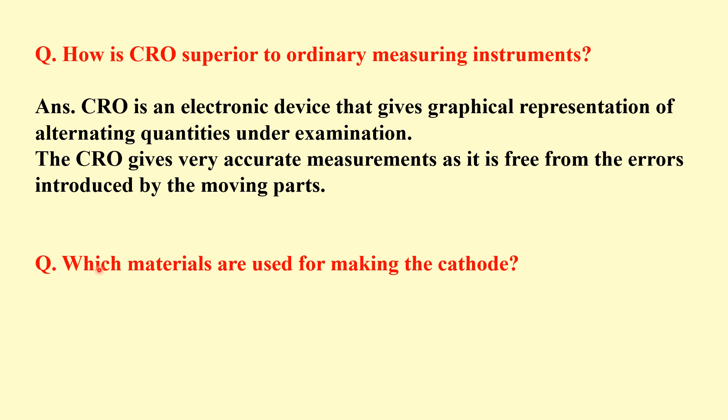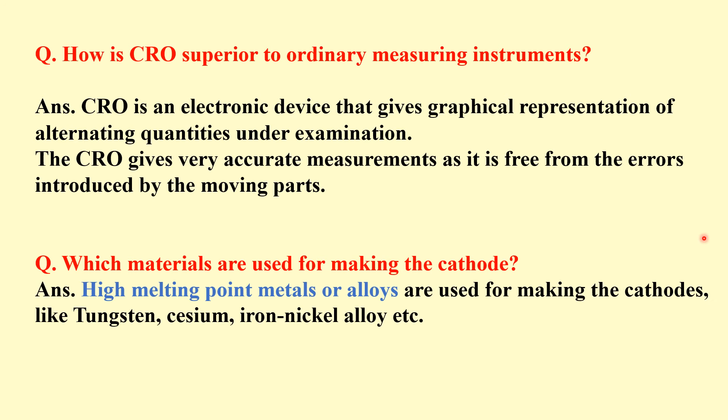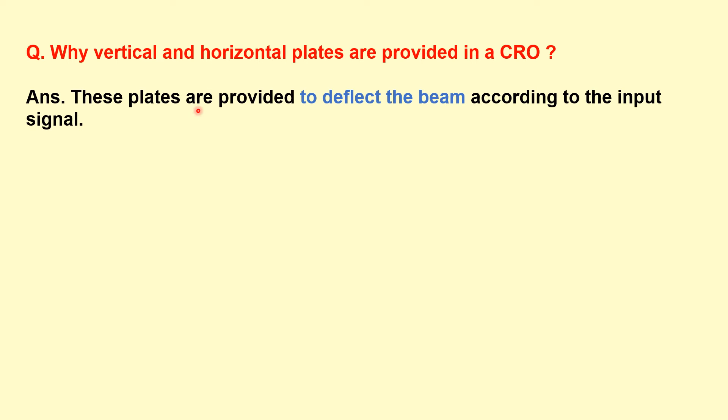And next question is which materials are used for making the cathode? So high melting point metals or alloys are used for making the cathodes like tungsten, cesium, or iron nickel alloy, etc. Next question is why vertical and horizontal plates are provided in a CRT? These plates are provided to deflect the beam according to the input signal.